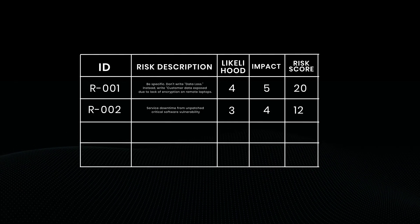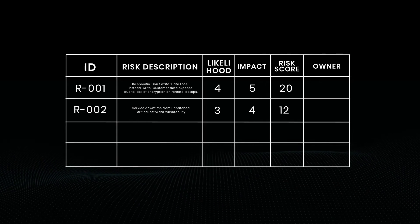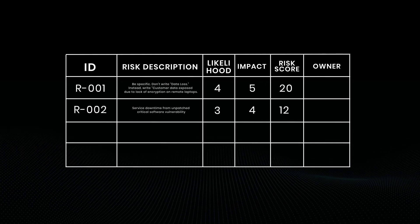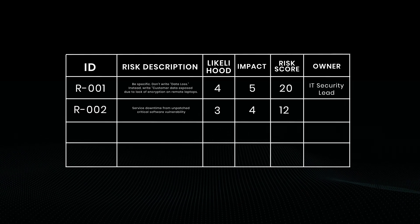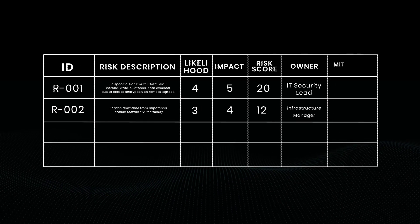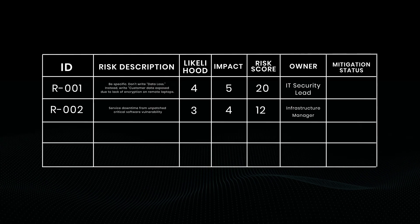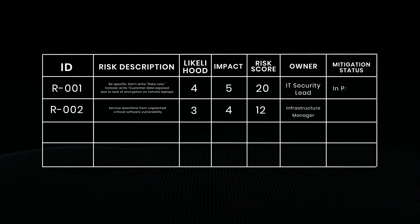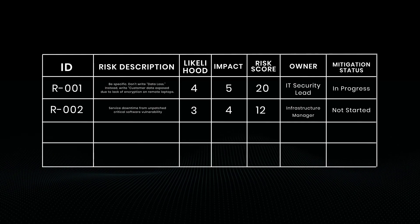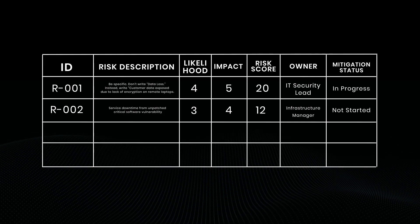The sixth column is owner — who's responsible for managing this risk? Use job roles, not vague labels: 'IT security lead,' not 'tech team.' Seventh column is mitigation status. Track progress using terms like: not started, in progress, resolved, accepted risk, or residual risk only. These seven fields give you a full picture: the what, the how bad, the who, and the now what.